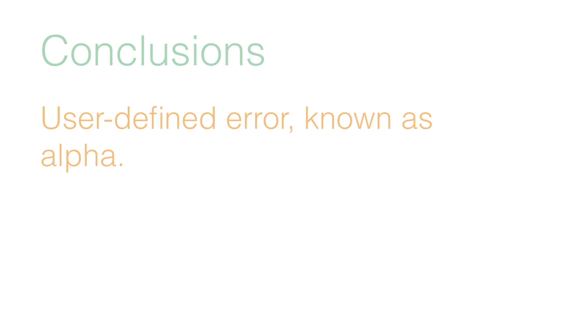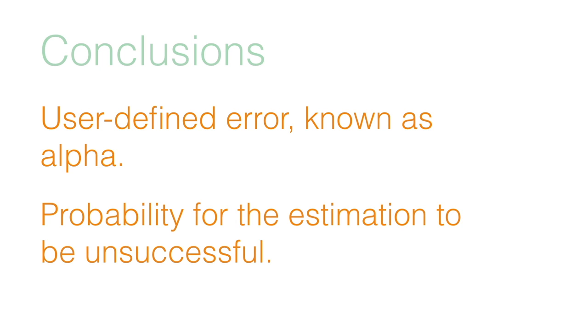A user-defined error, known as alpha, is always associated to a confidence interval. This error indicates the probability for the estimation to be unsuccessful.